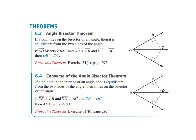The angle bisector theorem states that if AD bisects angle BAC, then DB is perpendicular to AB, just as DC is perpendicular to AC. We also have the converse of the angle bisector theorem: if a point is in the interior of an angle and is equidistant from both sides — meaning DB is perpendicular to AB, DC is perpendicular to AC, and DB equals DC — then AD must be the bisector of angle BAC.